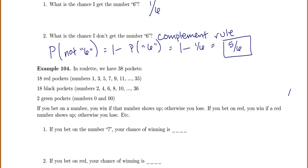In roulette, we have 38 pockets: 18 red pockets, 18 black pockets, and two green pockets. Red pockets have odd numbers, black ones have even numbers, and the green pockets have 0 and 00. If you bet on a number, you win if that number shows up, otherwise you lose. If you bet on number seven, your chance of winning is one out of 38, because there are 38 pockets but only one seven.